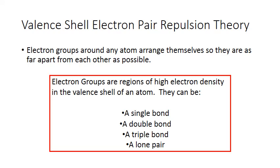An electron group is a region of high electron density in the valence shell of an atom. These can be associated with bonding electrons — the electrons shared in either a single bond, a double bond, or a triple bond — and it can also be associated with lone pair electrons.